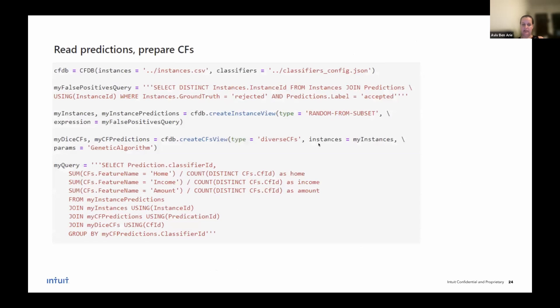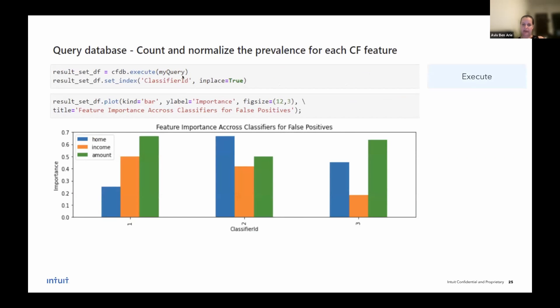So this is currently still work in progress. We're going to publish an open source package hopefully in the near future, but I would like to demonstrate how easy it is to use our system. So first, with just a simple line of code, we load our data, the instances we would like to explain, and our model or models. Then, using again a simple SQL query, we select the instances of interest. In my example, I would like to only query the model's false positives, not all the input I provided. I then can select the counterfactual generator. In my case, DICE, diverse counterfactuals. And again, using SQL, once I get the counterfactuals, I can then analyze them. Then I execute my query. And using simple Python, I can create a chart. In this case, I rank the feature importance across three different classifiers, only for the data's false positives across three different features. This is a very complicated analysis. And I did all of this with around 20 lines of Python and SQL code.